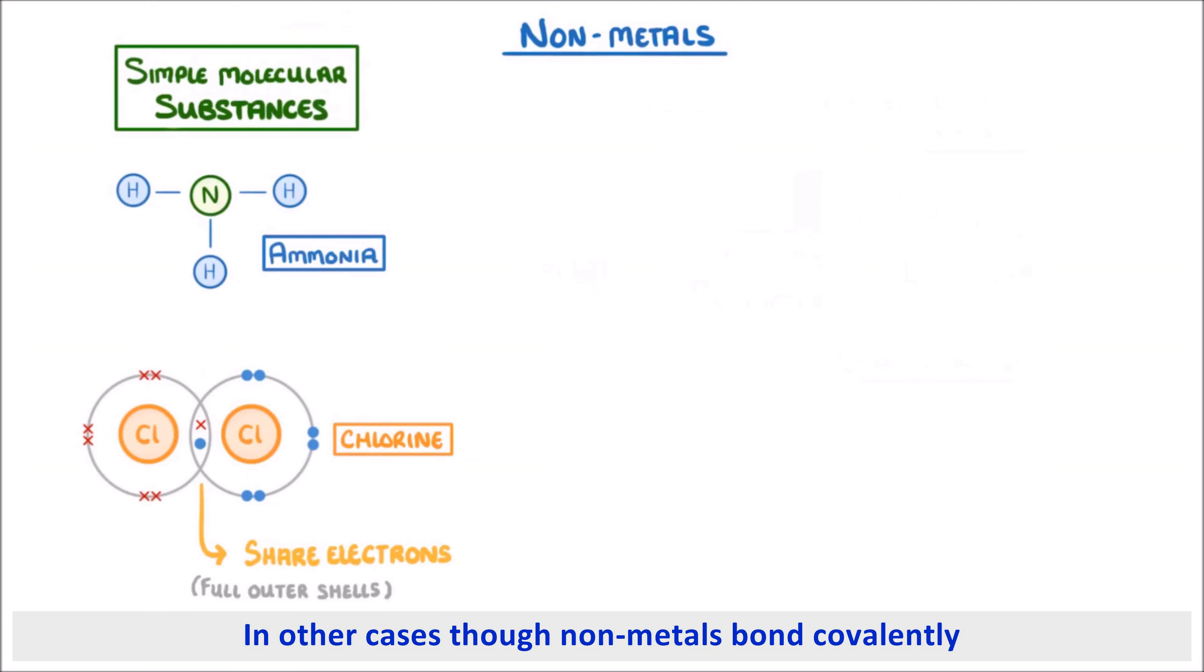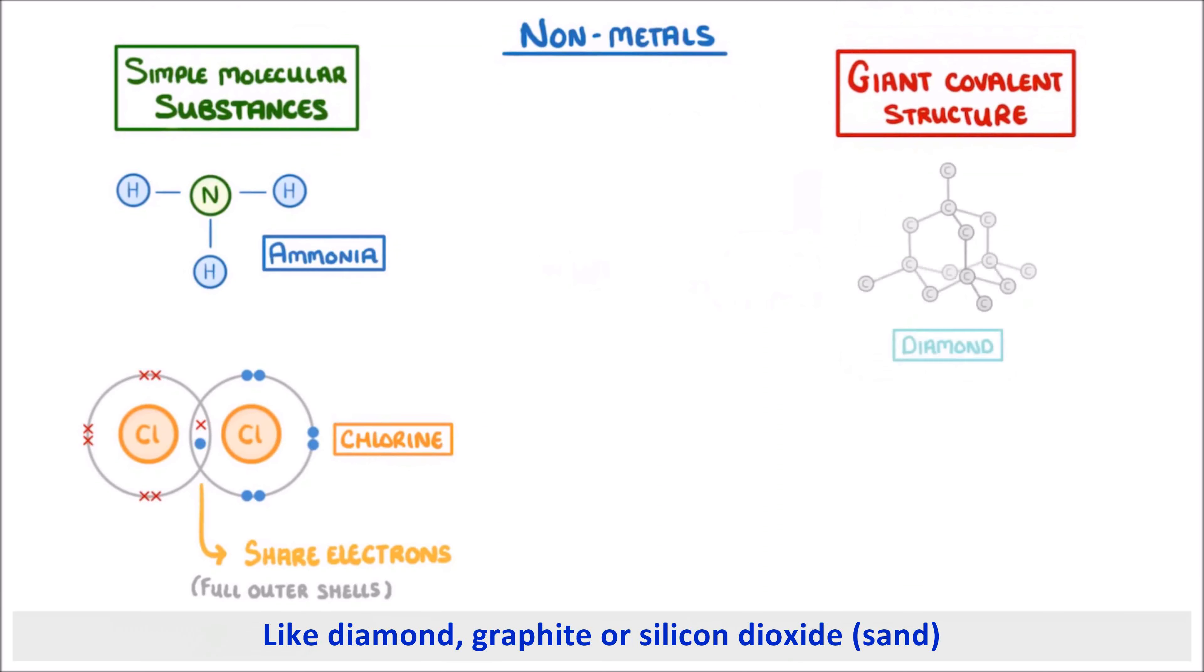In other cases though, nonmetals bond covalently to form giant covalent structures, like diamond, graphite, or silicon dioxide.